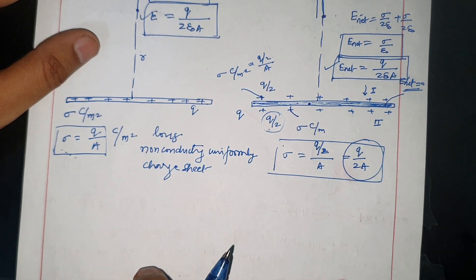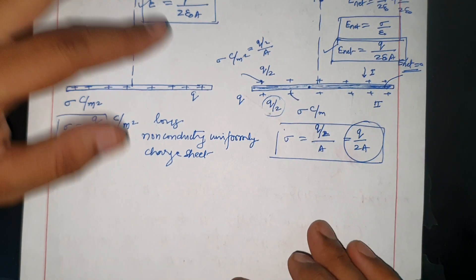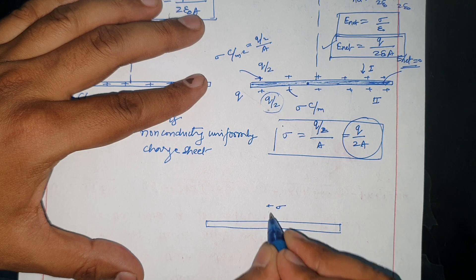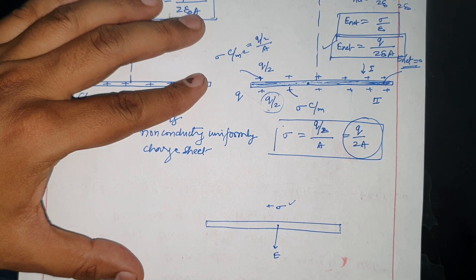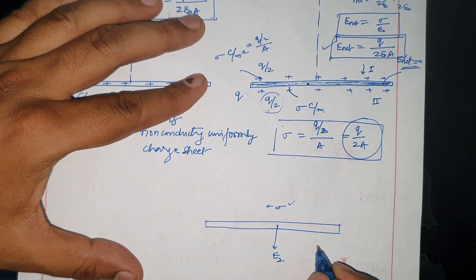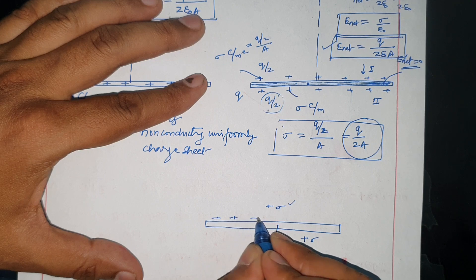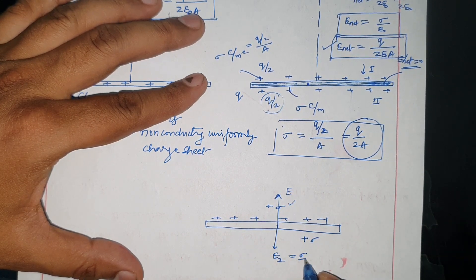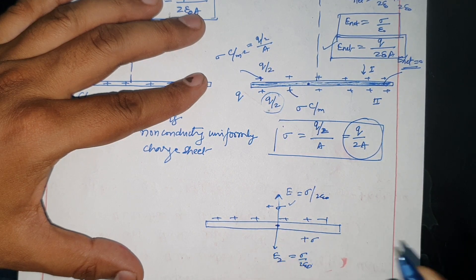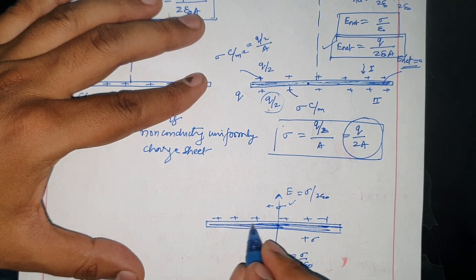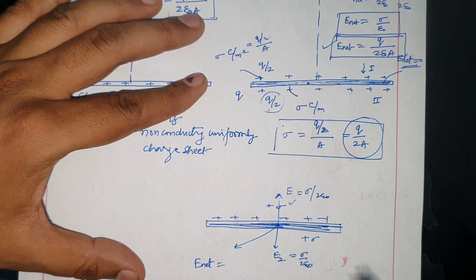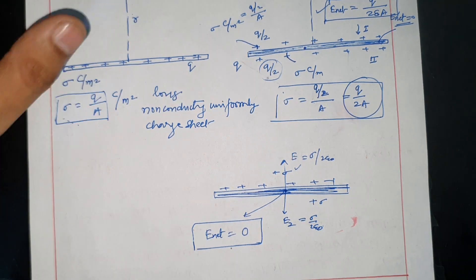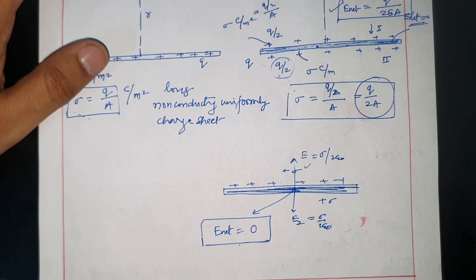I hope you understand this question. The key point is that inside a conducting material, the net electric field is always zero. Due to this property, the charge distributes on two surfaces and E2 from the second surface contributes equally, but the net result at the external point remains the same as the non-conducting case. Thank you.